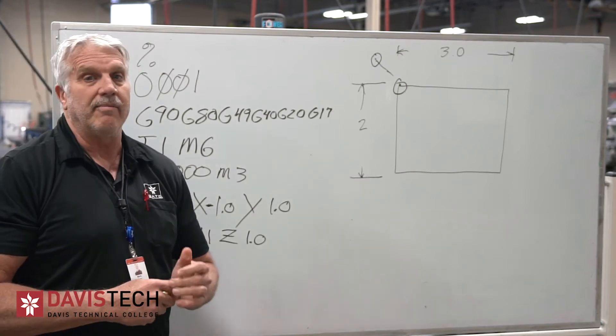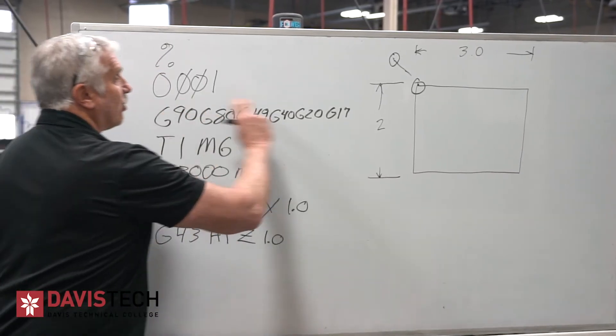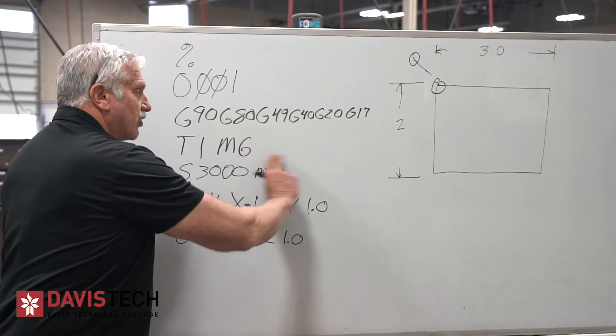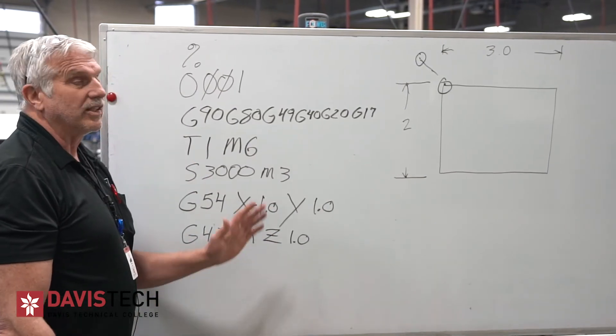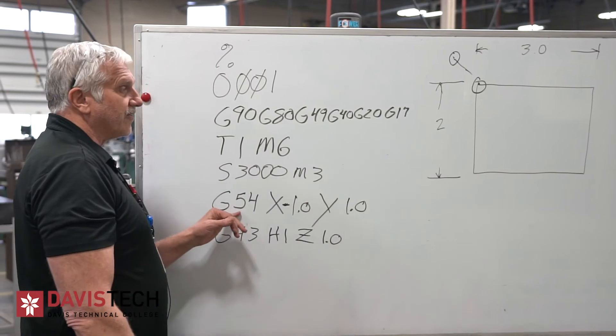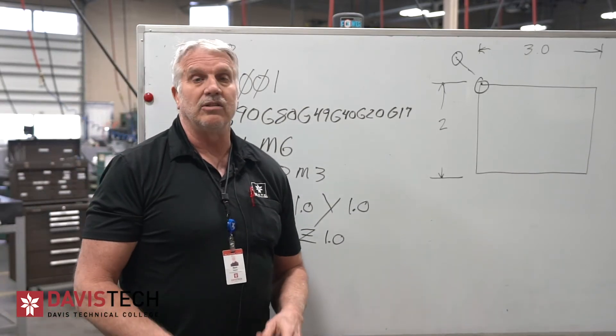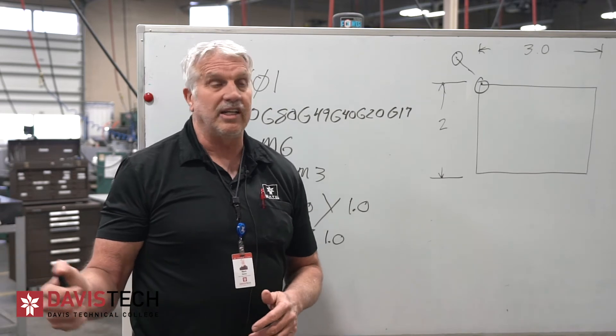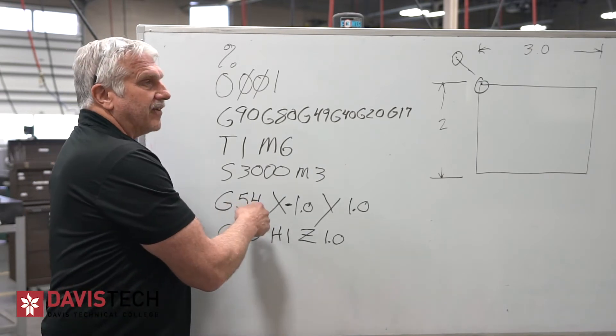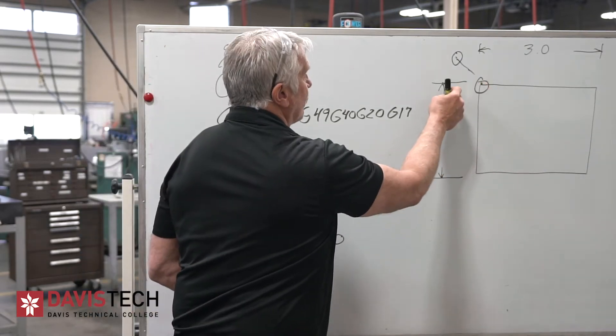Now when you run the program and you're just starting, you might run it in single block. Single block will do one line of code at a time. So it would read this whole thing and stop until you hit cycle start. Then it would read this and then execute it and then stop. And then it would turn on the spindle and stop because we're in single block. So let's just say we're in single block. Then when it goes here to this X1 and Y1 with G54, it's going to go to this location. Now when you set your G54, that's on the machine. It's a certain location on the machine that you're going to set and put in the machine for where this is located. But as soon as you put that information in there, when it reads G54, it's like a map, it knows where to go in relationship to our G54. And we're at negative one and positive one up.